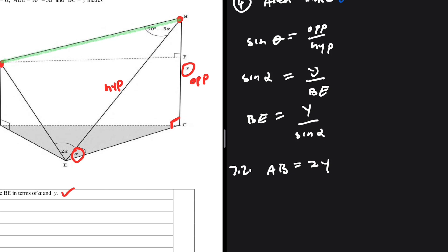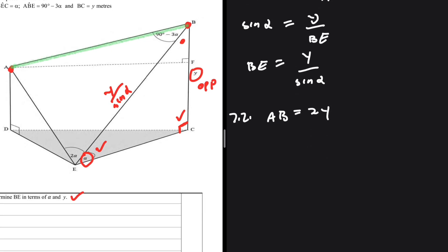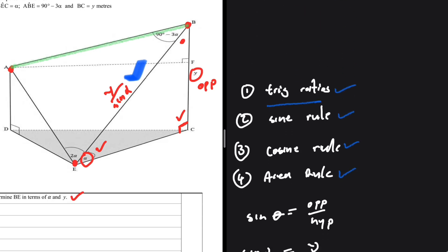Triangle BCE has a lot of information: the opposite side is y, the angle is alpha, the right angle is 90 degrees, and we know the hypotenuse is y divided by sine of alpha. So we move from triangle BCE to triangle ABE, which has less information. They share the common side BE, which we know is y divided by sine of alpha. Can we use trig ratios in triangle ABE? No — there's no obvious 90-degree angle, so we move to the sine rule.